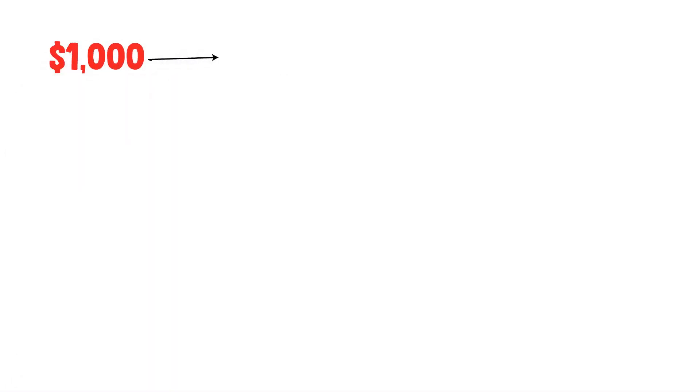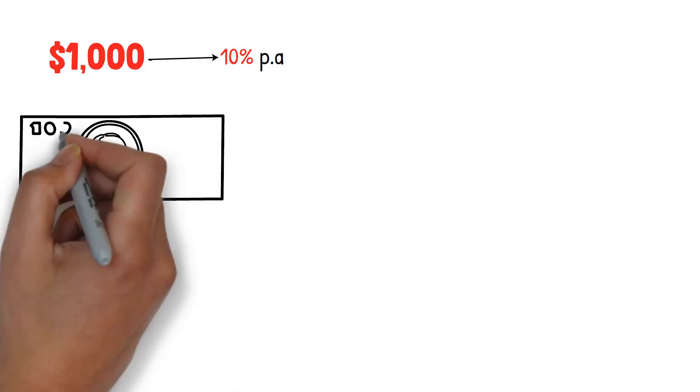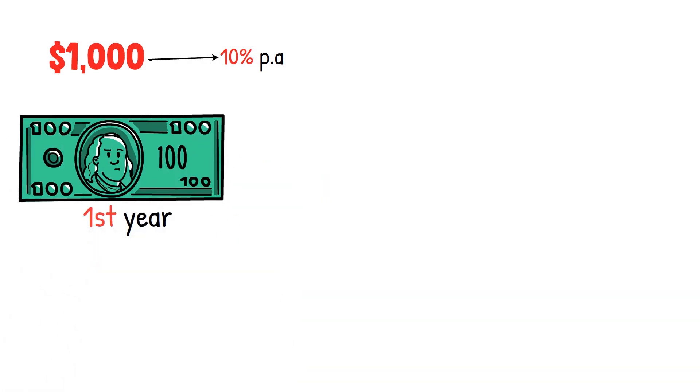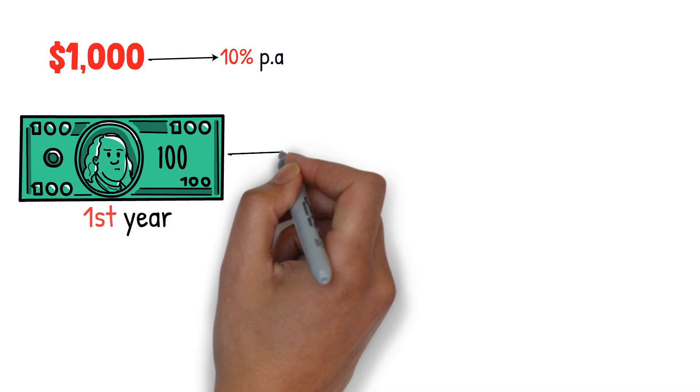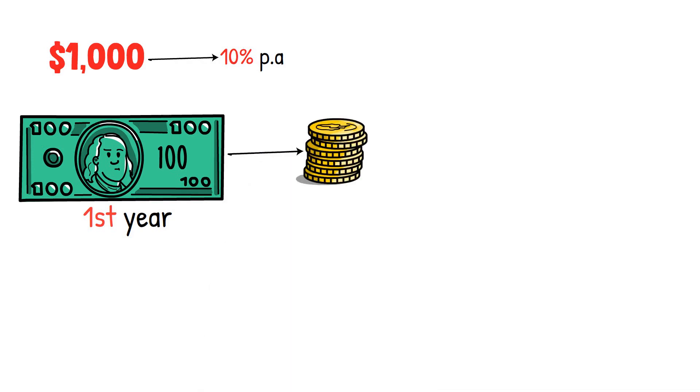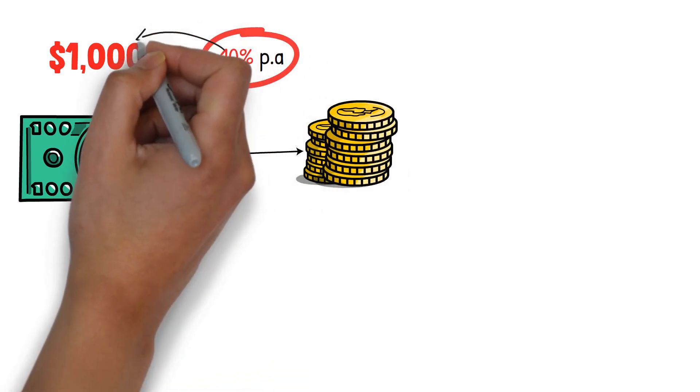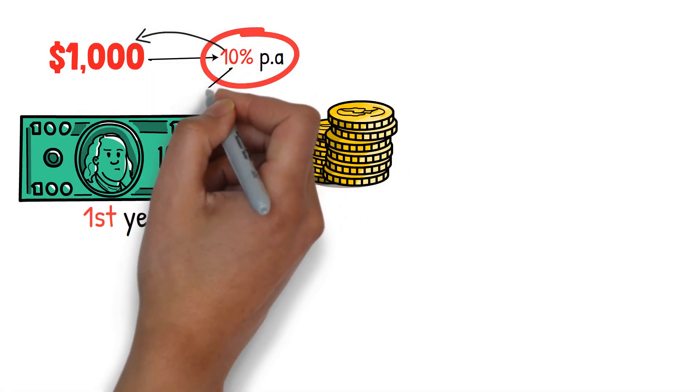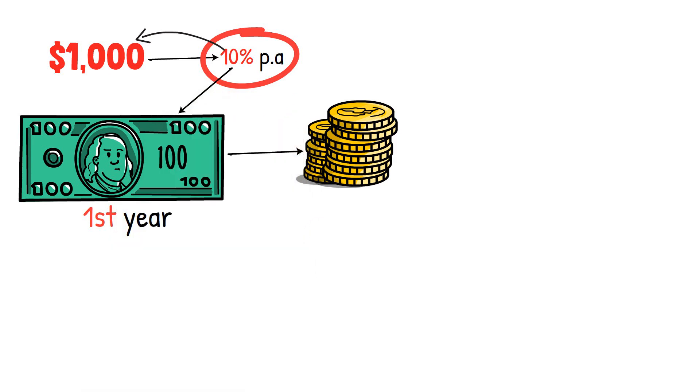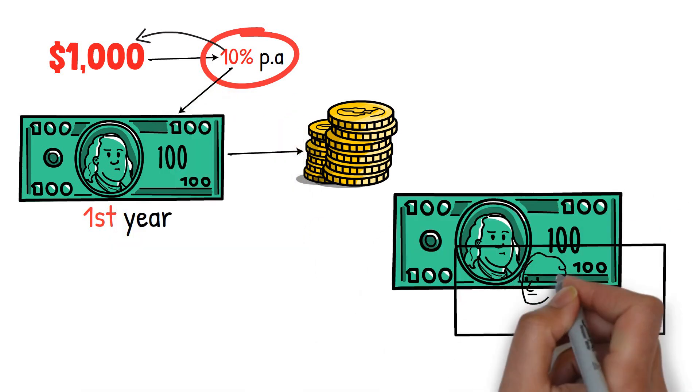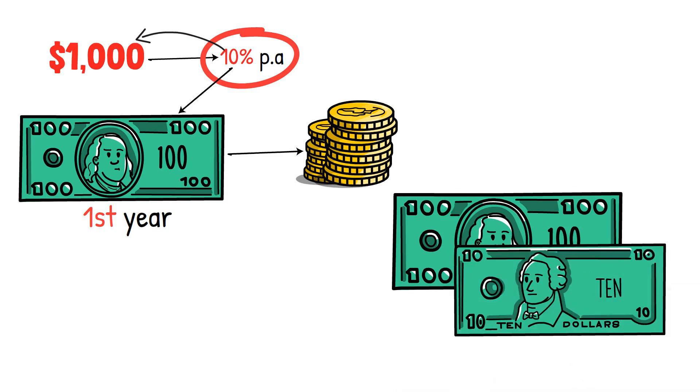Assume you put $1,000 in a savings account with a 10% annual interest rate. You would earn $100 in interest at the end of the first year. If you leave the interest in the account and do not withdraw it, you will also begin to earn interest on it. So in the second year, you would earn 10% interest not only on your initial $1,000, but also on the $100 interest you made the previous year. This means you'd earn $110 in interest the following year. The same would occur in the third year, and so on.